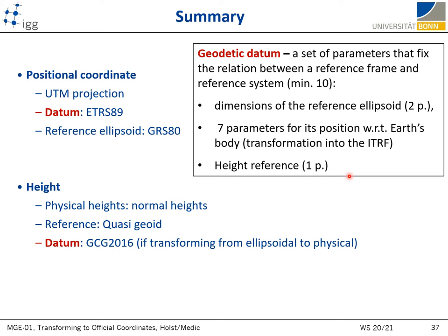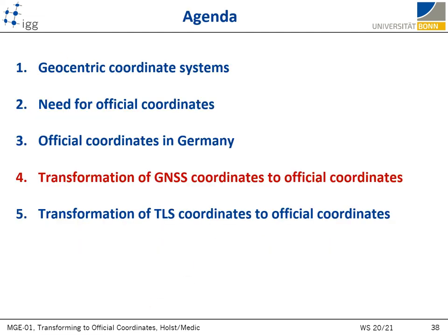The relationship between ITRF, which follows Earth's motion and changes due to plate tectonics, and the official 2D positional coordinates of Germany, is defined by transformation parameters between ITRS89 and ITRF. We can say that ITRS89 is the positional datum for Germany, while the German height datum or the surface of reference is GCG. After all this background, I will now show how coordinates estimated with GNSS and terrestrial laser scanners are transformed into official coordinates.